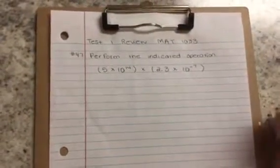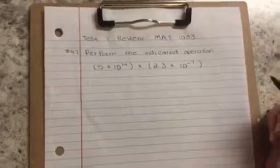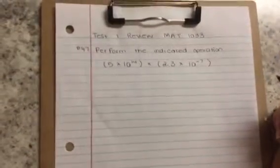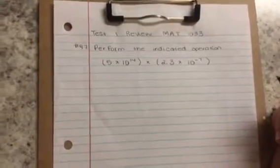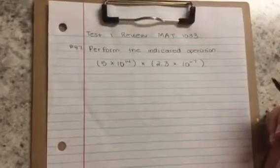This is the test 1 review for MAT 1033 intermediate algebra. This video is going to look at number 47. Number 47 says perform the indicated operation.